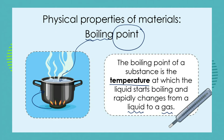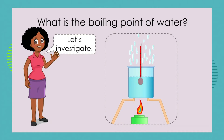That temperature at which the liquid starts to boil is called our boiling point. We measure boiling point, or any temperature for that matter, in degrees Celsius. Water has a boiling point of 100 degrees C. So let's investigate how we could determine what the boiling point of water is.